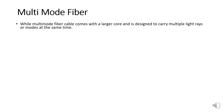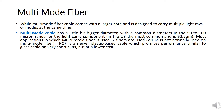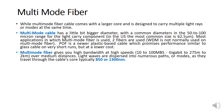Multi-mode fiber has a larger core and is designed to carry multiple light rays or modes at the same time. Multi-mode cable has a bigger diameter, with a common diameter in the 50 to 100 micron range for the light-carrying component, and the most common size is 62.5 microns. Multi-mode fiber supports bandwidth of 10 to 100 Mbps, and Gigabit up to 275 meters.